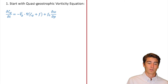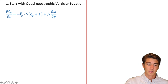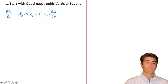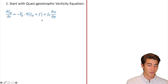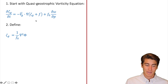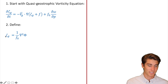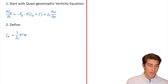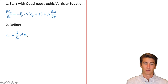Next up, we're going to manipulate the vorticity equation. Here you see the quasi-geostrophic vorticity equation — if you're wondering where we got that, I derived it in another video so you can check out my channel. Basically we're going to start with that. Step two, we're going to define vorticity — that's the symbol for vorticity, and the sub-g means you're dealing in geostrophic terms.